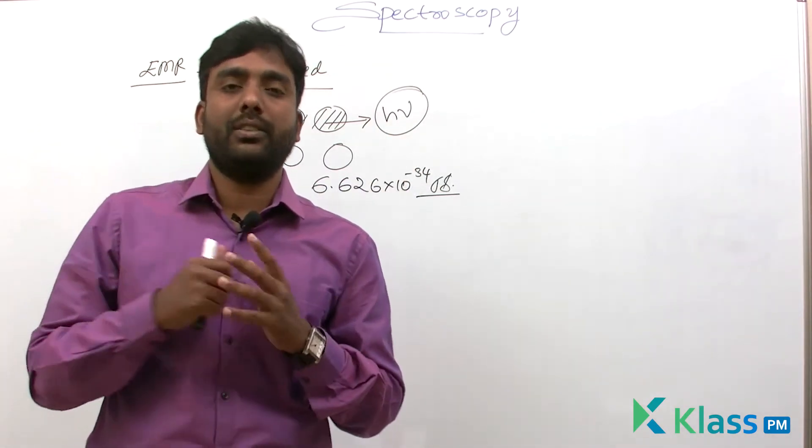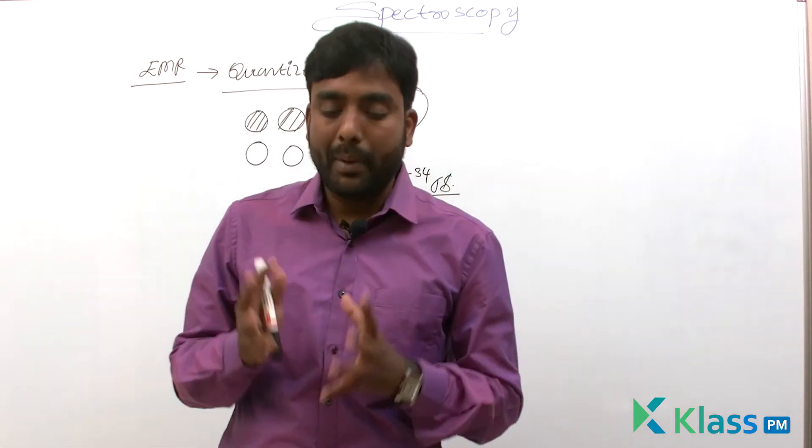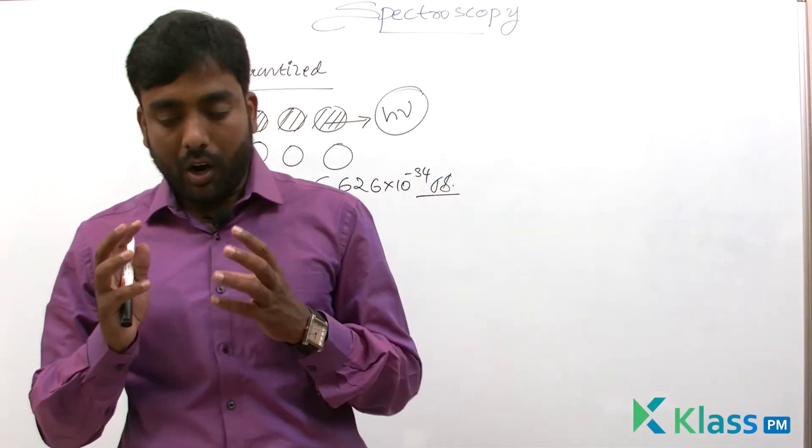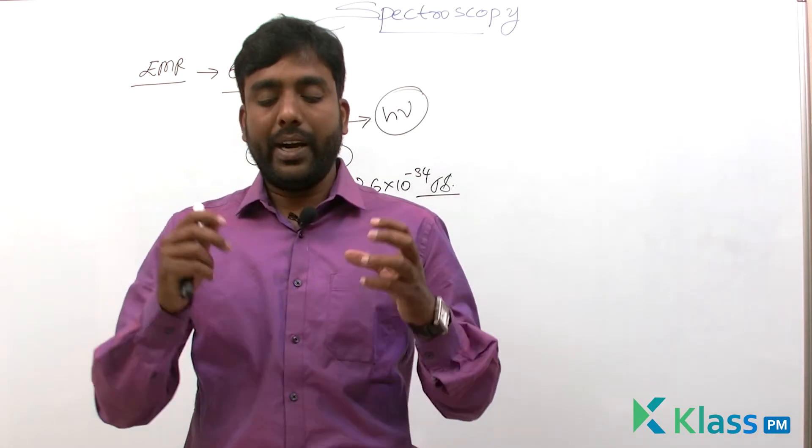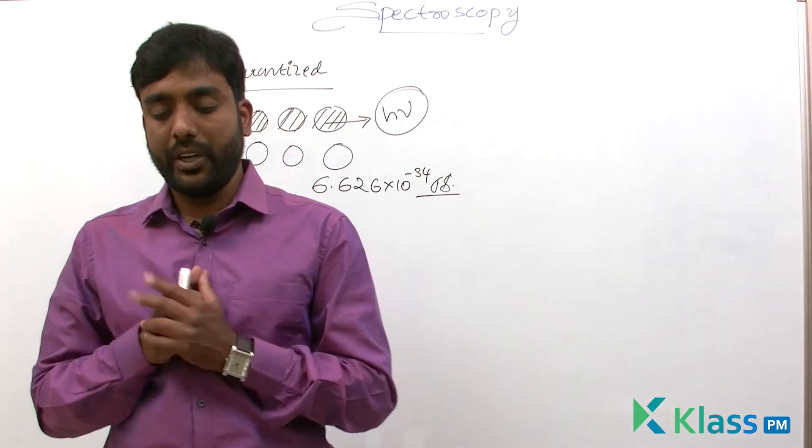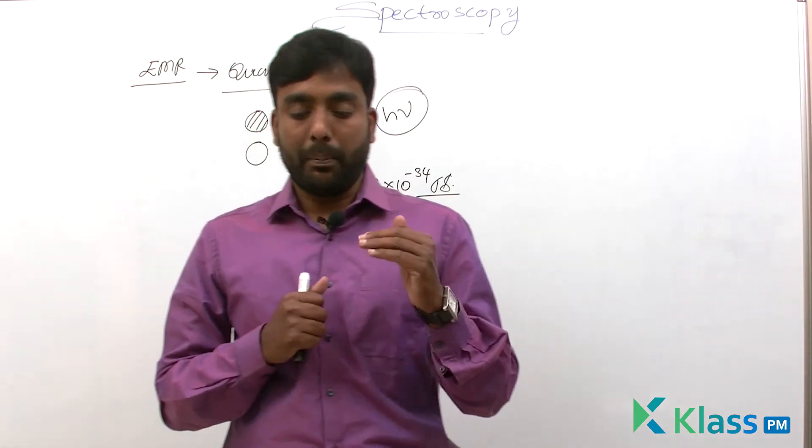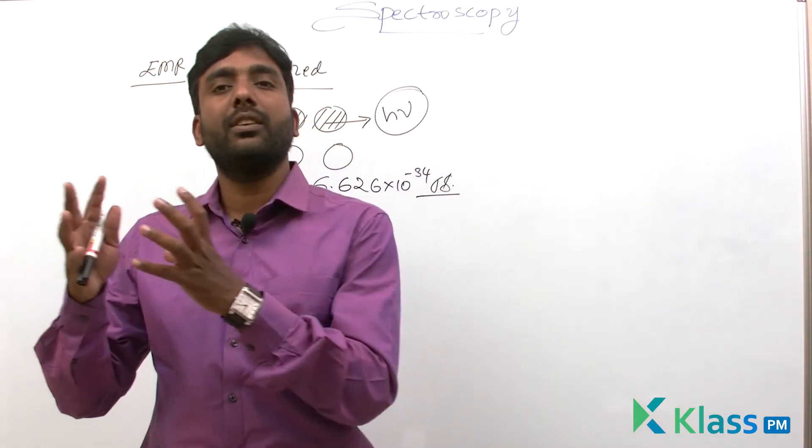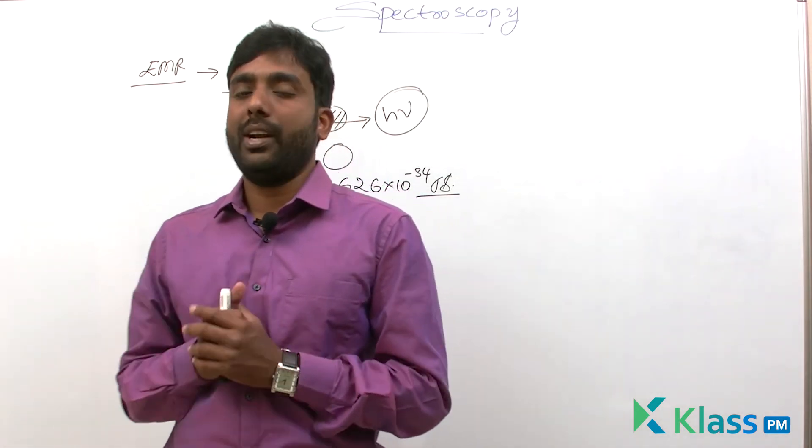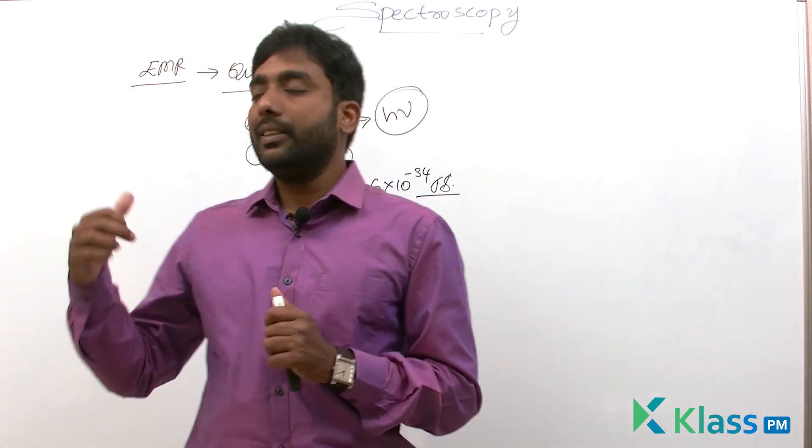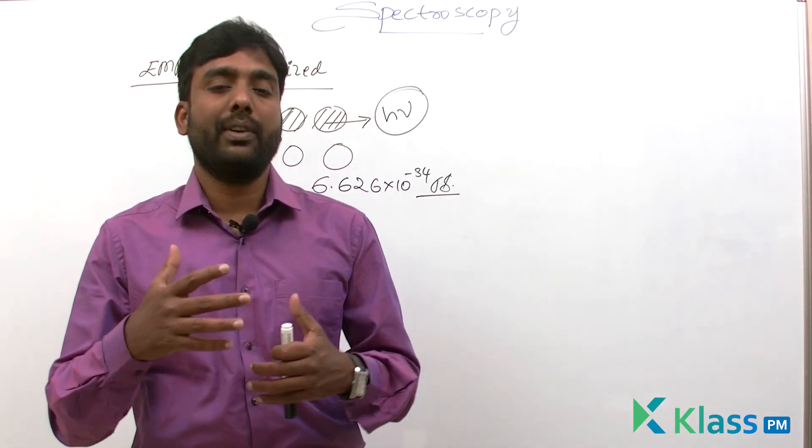According to Max Planck quantum theory, the oscillator is discontinuous, and any change in its energy can occur only by means of a jump between two distinct states of energy. Now let's see how this will help us understand spectroscopy.